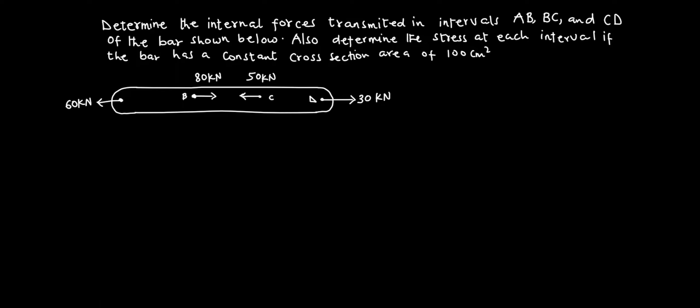So we are to determine the internal forces transmitted in intervals AB, BC, and CD. To do this, I'm going to consider each interval and the external forces acting on it, then indicate the internal force — the internal reaction. You have point A, point B, point C, and point D. We need to cut this bar, drawing a line of cut between the intervals. Considering interval AB first.